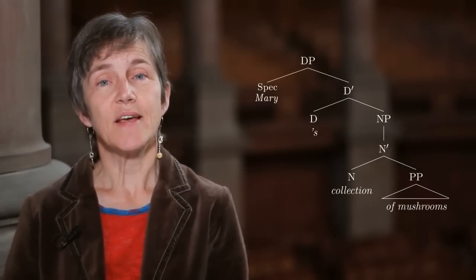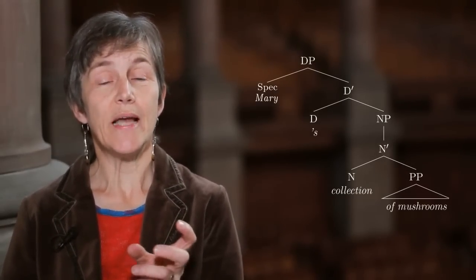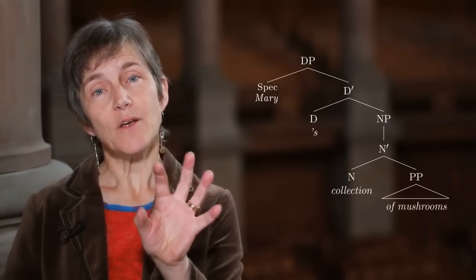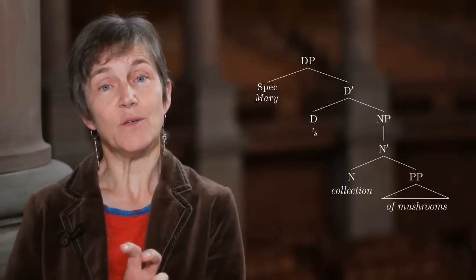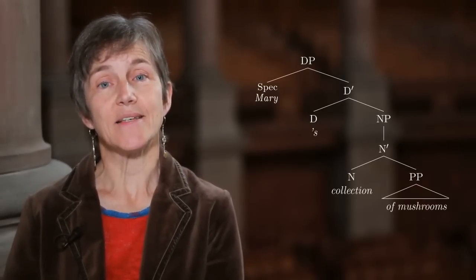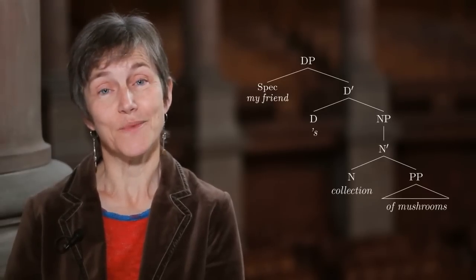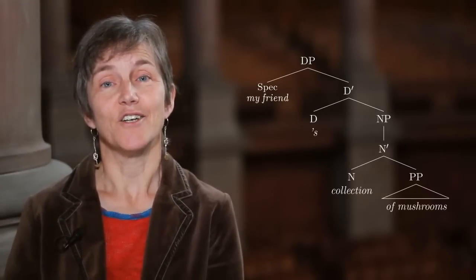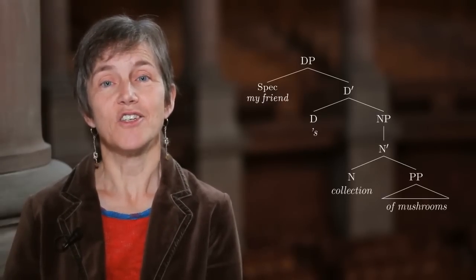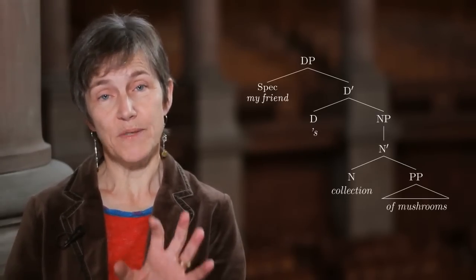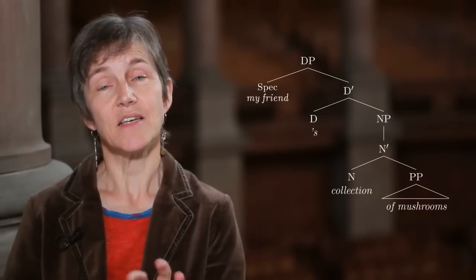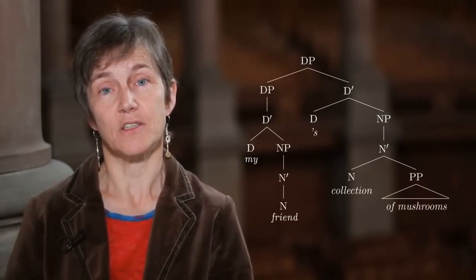It's also completely consistent with this that the possessor doesn't have to be just a word like Mary. That specifier position is a position for phrases, and indeed we can have full phrases there. So as well as Mary's collection of mushrooms, we can have my friend's collection of mushrooms; as well as Joanna's hat, we can have the Duchess of Cambridge's hat. The possessor can be a full phrase because it's occupying a specifier position. Just as in verb phrases, so too in noun phrases there can be arguments of the head.